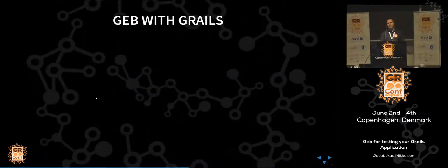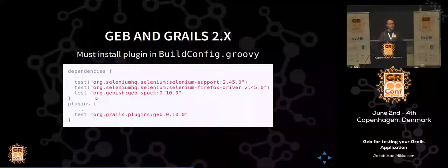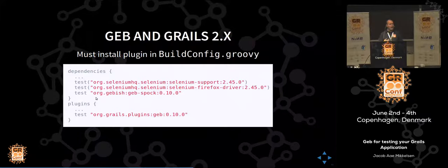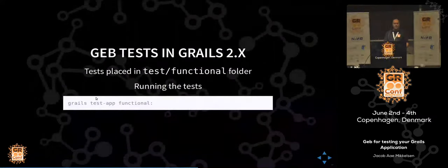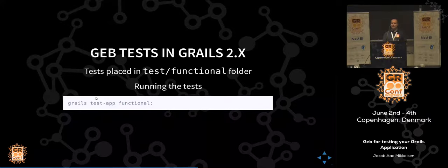Since we're all doing Grails, let's see how we interact with Grails, starting with Grails 2. In the Grails 2 series, you need to install some dependencies and the GEB plugin itself. The example here is using the Firefox driver. The Selenium support on top of that is required if you want to set values in select dropdowns. I recommend always including it — it gives nasty errors if left out when trying to use dropdowns and select boxes. To run the tests: grails test-app functional colon — that's the syntax for Grails 2, running all the functional-type tests. The tests are placed in test/functional.